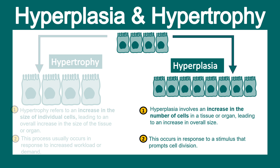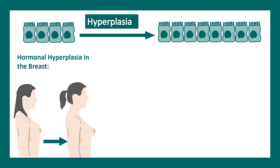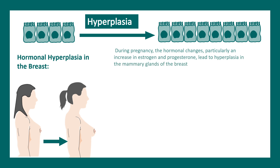First let's talk about hyperplasia. Hyperplasia could be pathological or physiological. One physiological example is hormonal hyperplasia of the breast during pregnancy. Hormonal changes happen — estrogen and progesterone levels oscillate — and that leads to hyperplasia of the mammary gland, which prepares the mother to nourish the baby.